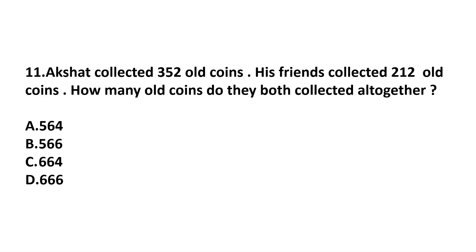Question 11: Akshat collected 352 old coins and his friend collected 212 old coins. How many did they collect altogether? 352 plus 212: 2 plus 2 is 4, 5 plus 1 is 6, 3 plus 2 is 5. Our answer is 564. Answer: option A.